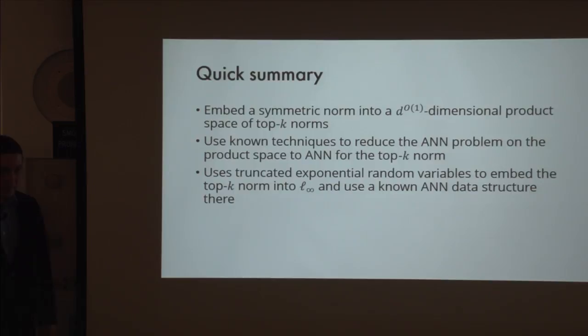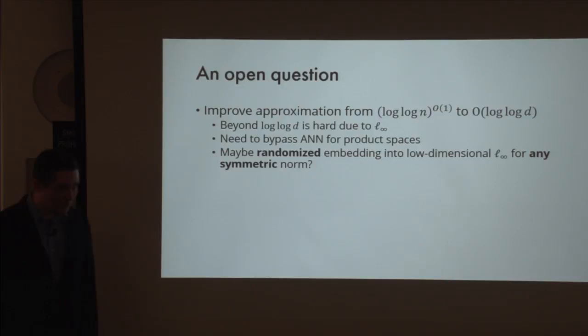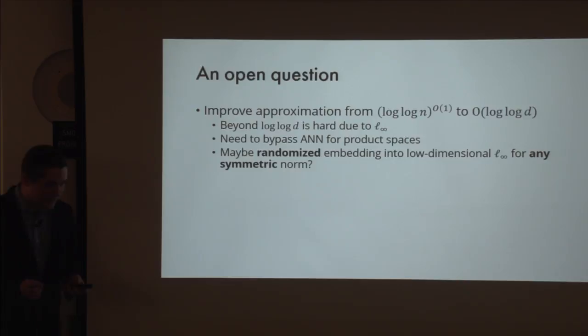One open question is to reduce the approximation from poly-log-log N to log-log D. Better than log-log D there is no real hope because L-infinity kind of requires that much. It would potentially make things more streamlined, bypassing the powerful hammer of solving ANN for product spaces. Perhaps—as conjectured—we can embed any symmetric norm into low-dimensional L-infinity using randomized embeddings. We don't know how to rule that out.